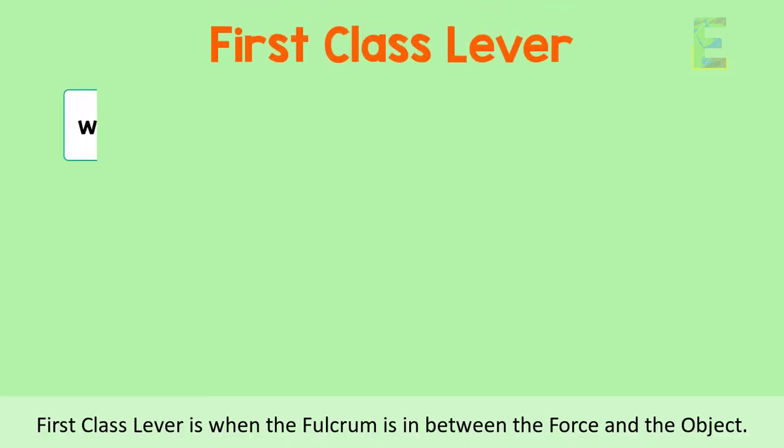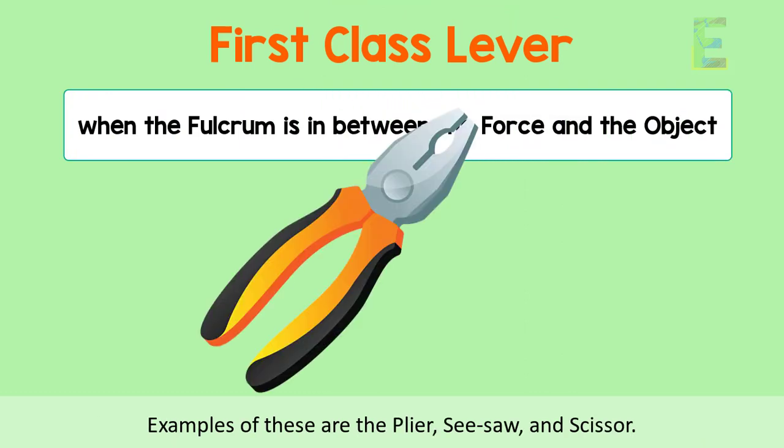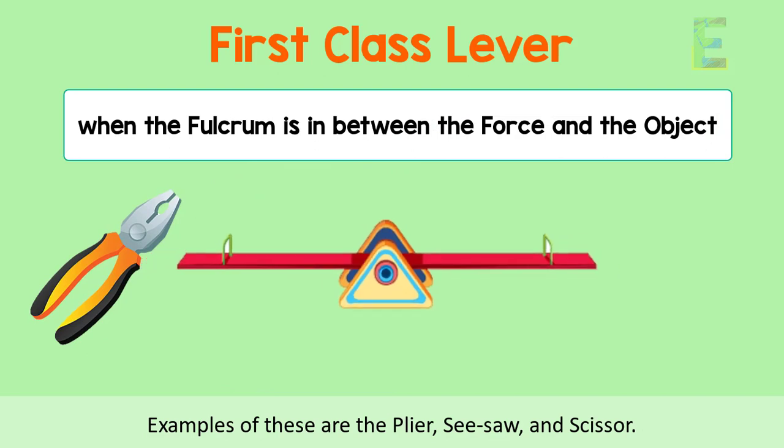First class lever is when the fulcrum is in between the force and the object. Examples of this are the pliers, seesaw, and scissors.